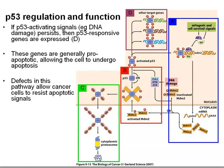We now think about what happens when DNA damage signals recede — as in the DNA damage has been repaired. In that situation, CHK2, ATM, and ATR are inactive. All newly produced p53 is unphosphorylated. Any residual phosphorylated p53 can still induce MDM2, and that newly produced MDM2 is unphosphorylated.